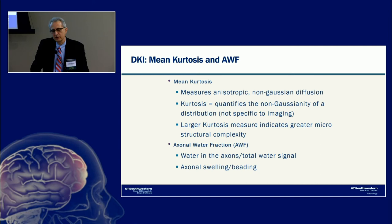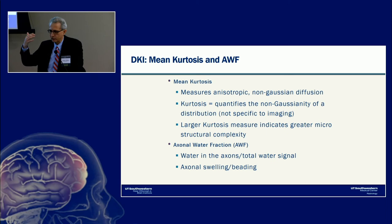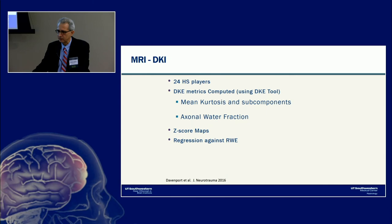Beyond standard DTI, the study also acquired diffusion kurtosis imaging (DKI) by adding an additional B-value to capture non-Gaussian diffusion, providing measures of microstructural complexity. DKI also yields axonal water fraction — the ratio of axonal water to total water signal — potentially indicating axonal swelling. For 24 high school players, using the same Z-score mapping approach, a significant linear relationship was found between mean kurtosis and cumulative impact exposure comparing post- to pre-season.